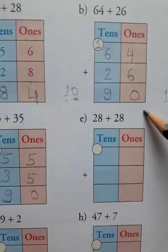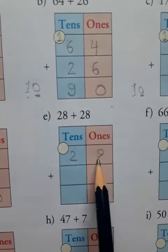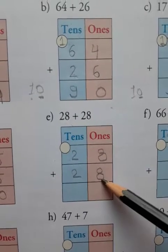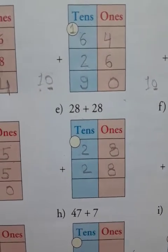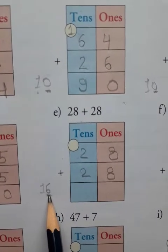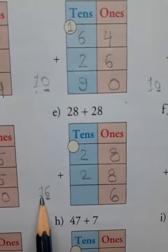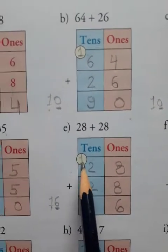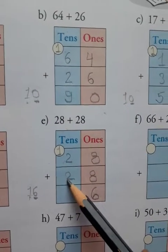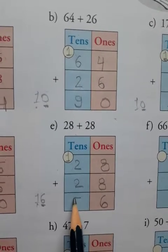Next is 28 plus 28 — same numbers. Write 28 and 28. You add 8 plus 8 is equal to 16. How do you write 16? You can see 6 in the ones place, so you write 6 here. And this 1 is in the tens place, so you carry over to tens. Now, 2 plus 2 is equal to 4. And you add this carry: 4 plus 1 is equal to 5. So 28 plus 28 is equal to 56.